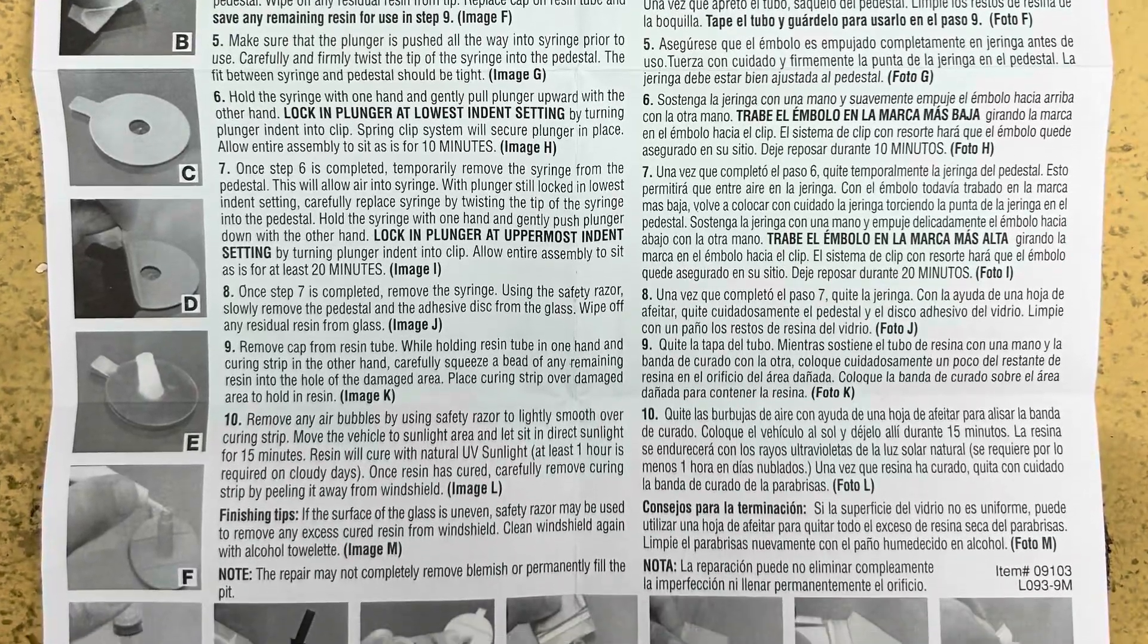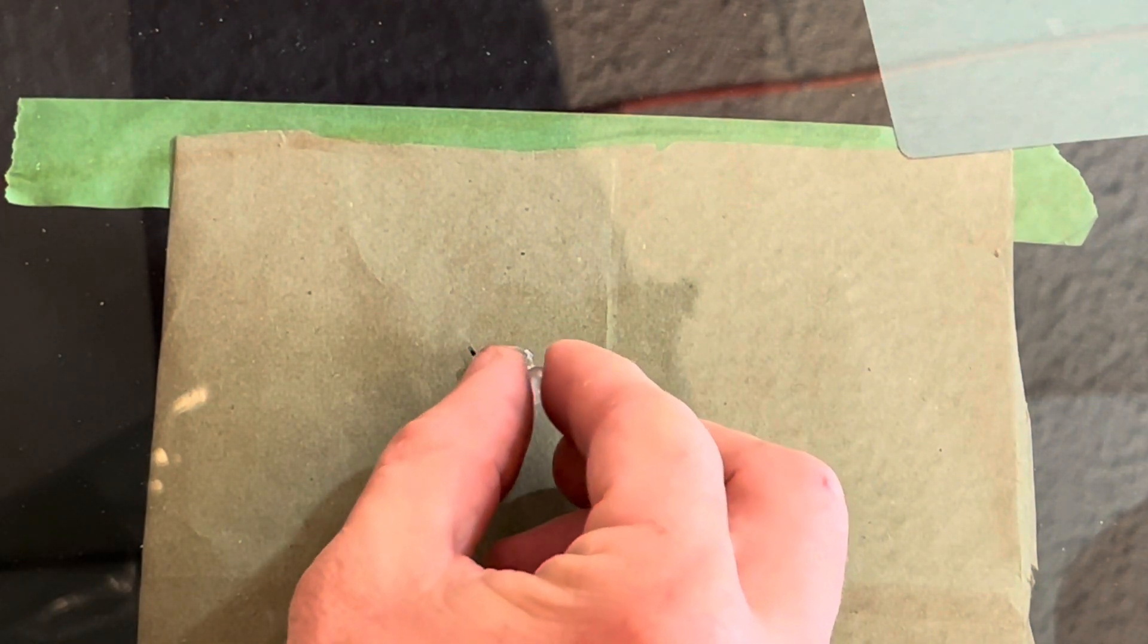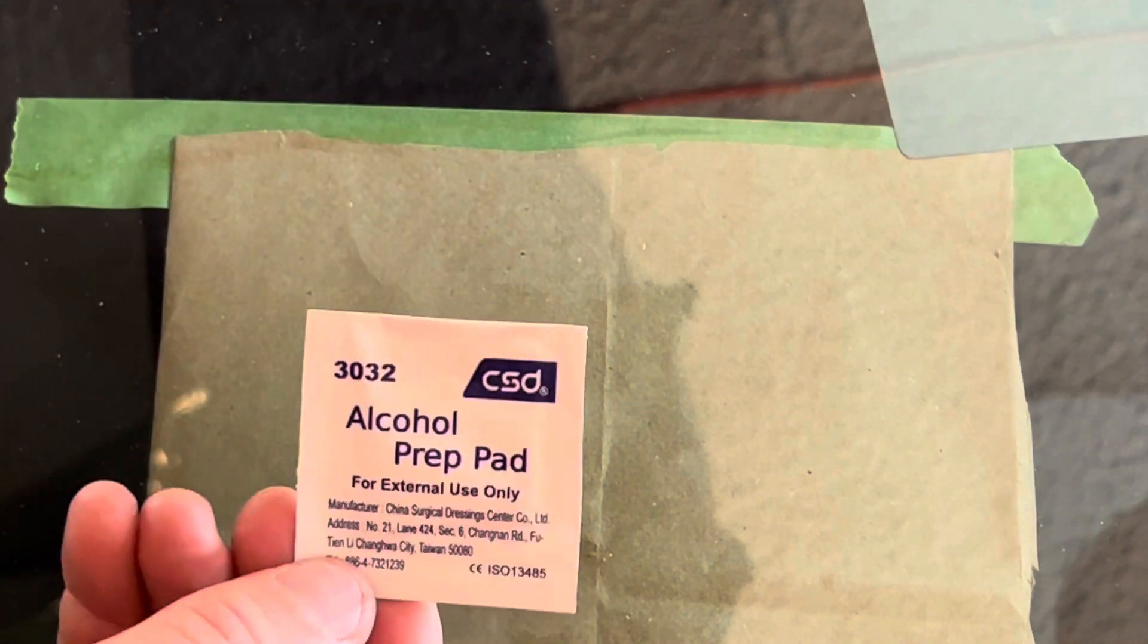So here's the crack. I put a little piece of brown paper behind it to try and help the camera pick it up better. The first step asks us to use this little push pin to remove any loose pieces of glass. Now we're going to use this alcohol wipe to clean the surface of the windshield, which will allow the plunger to adhere better.